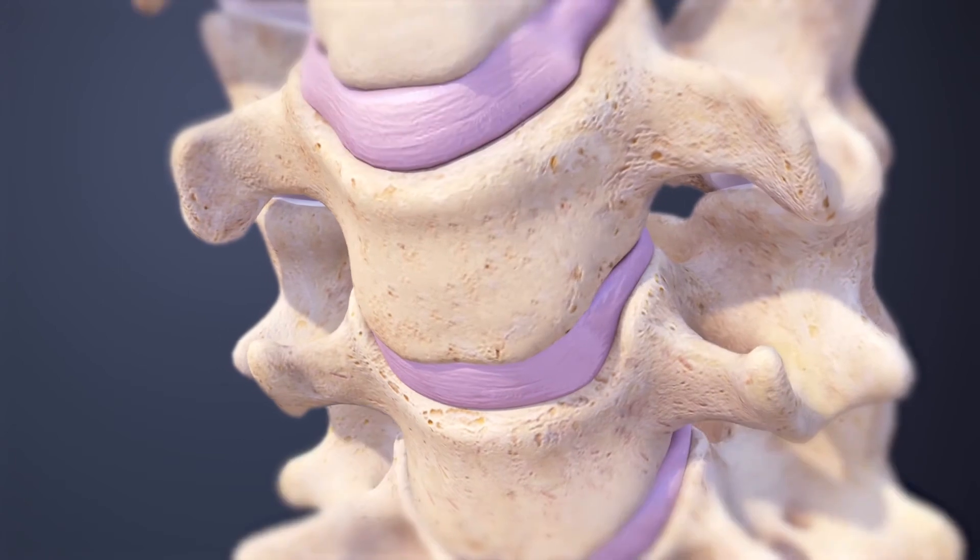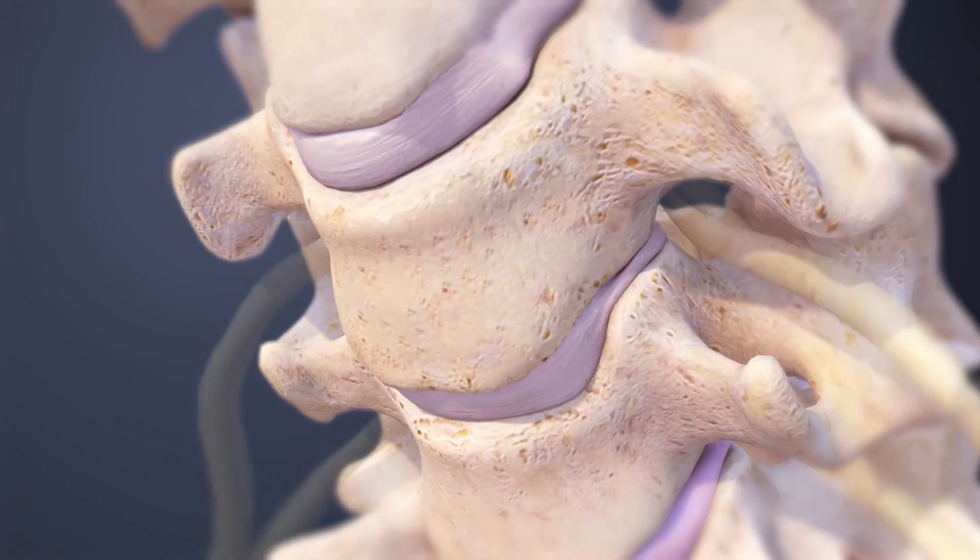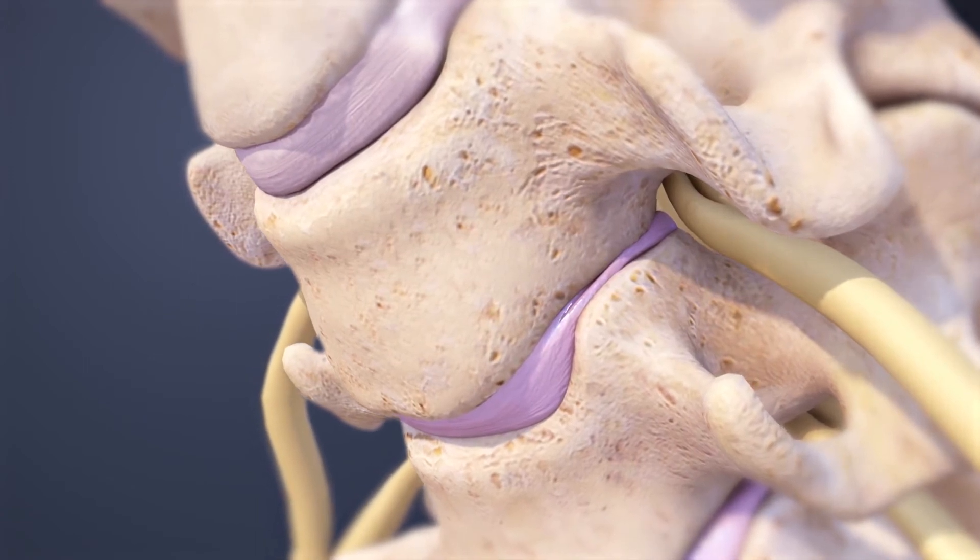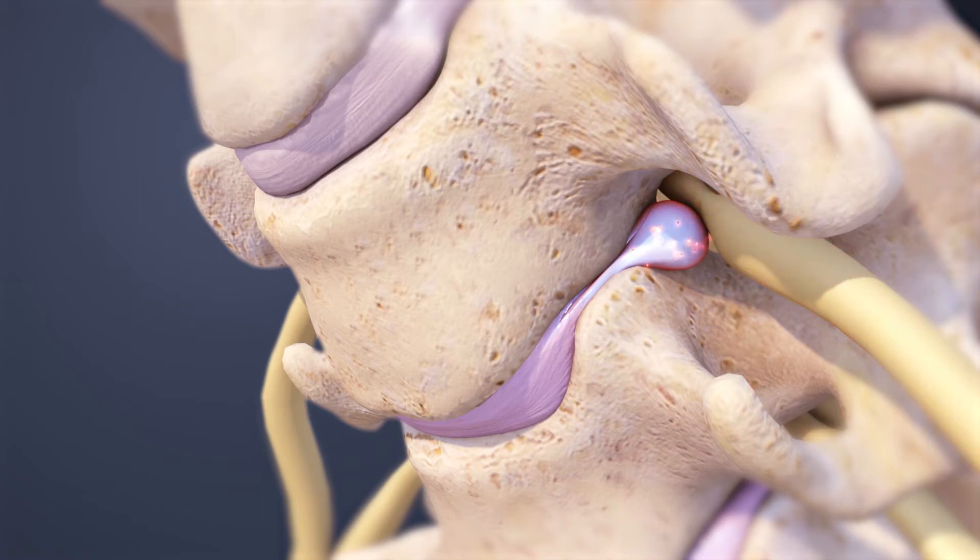Cervical discs lose water with age, becoming flatter and less flexible. These degenerative changes can potentially lead to pain, such as if a disc herniates and leaks inflammatory proteins onto a nearby spinal nerve.